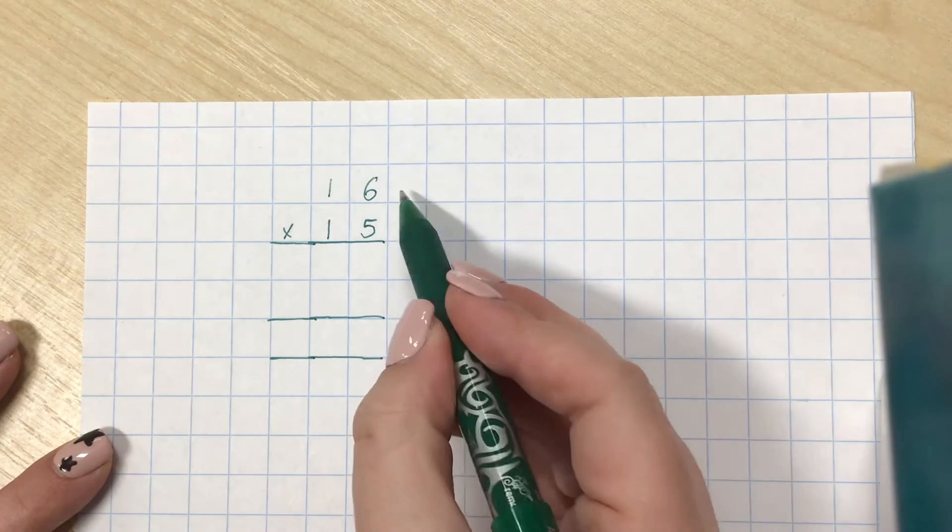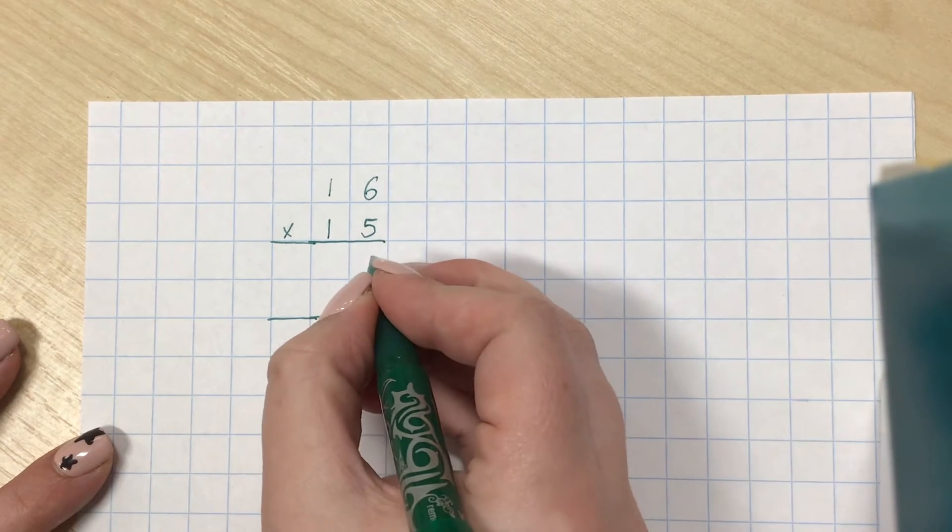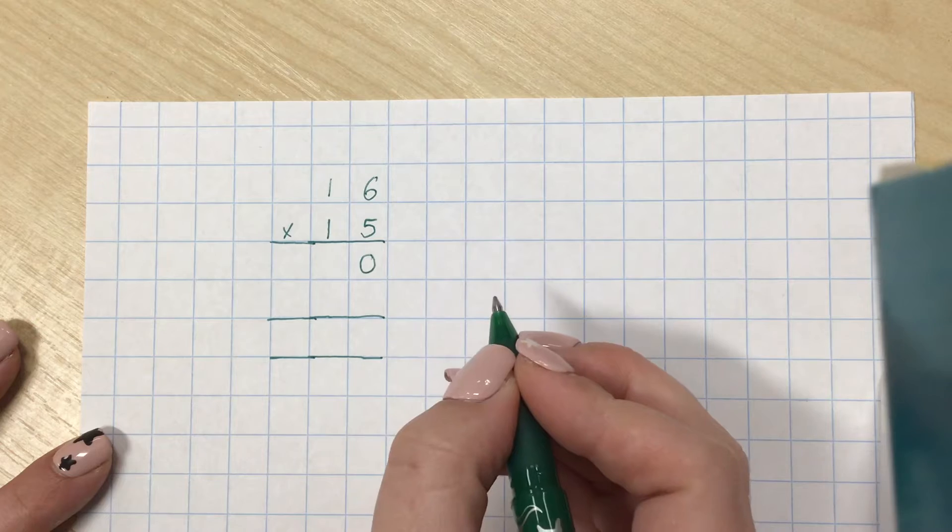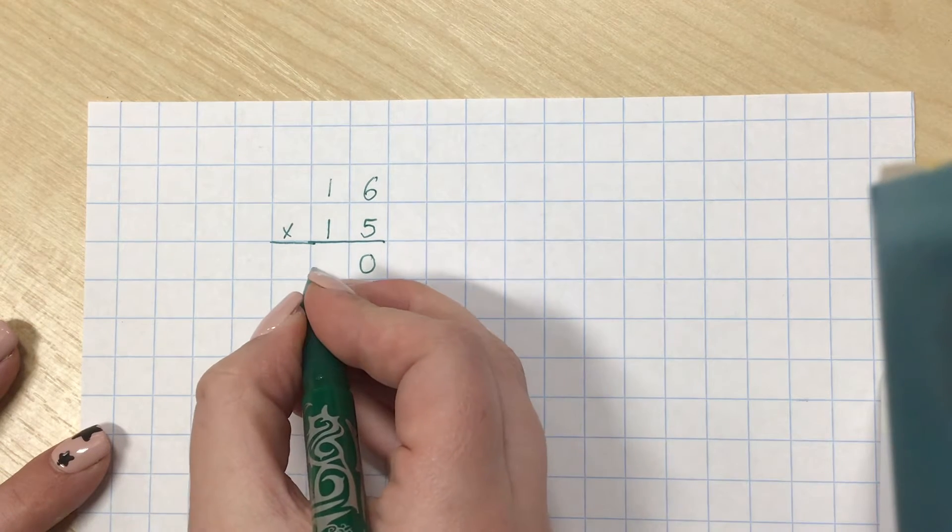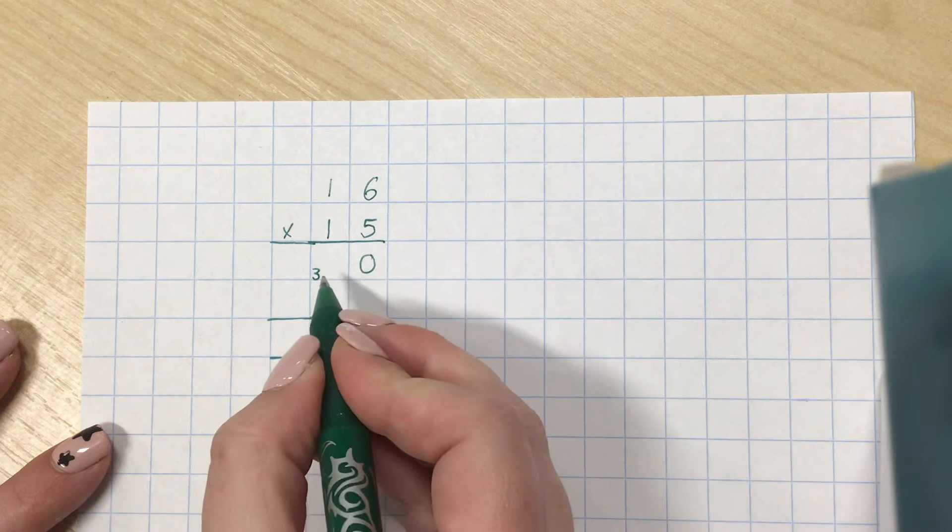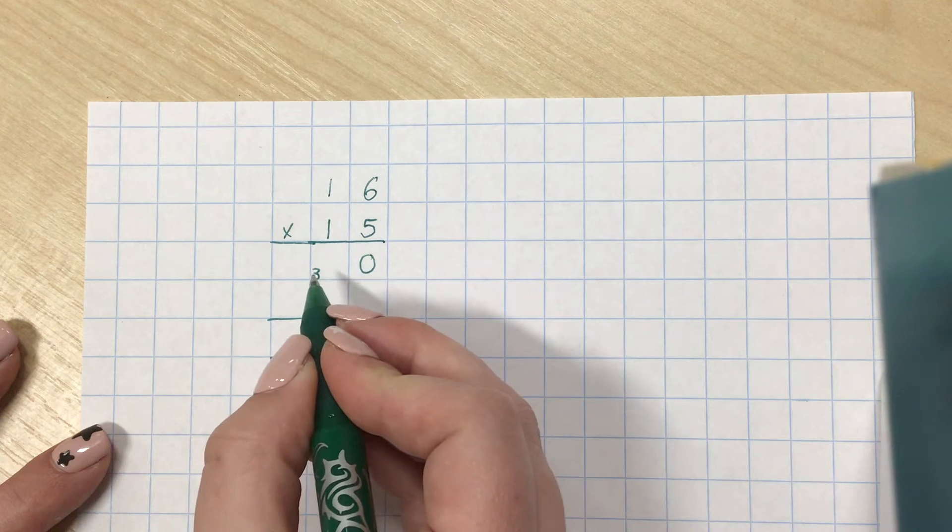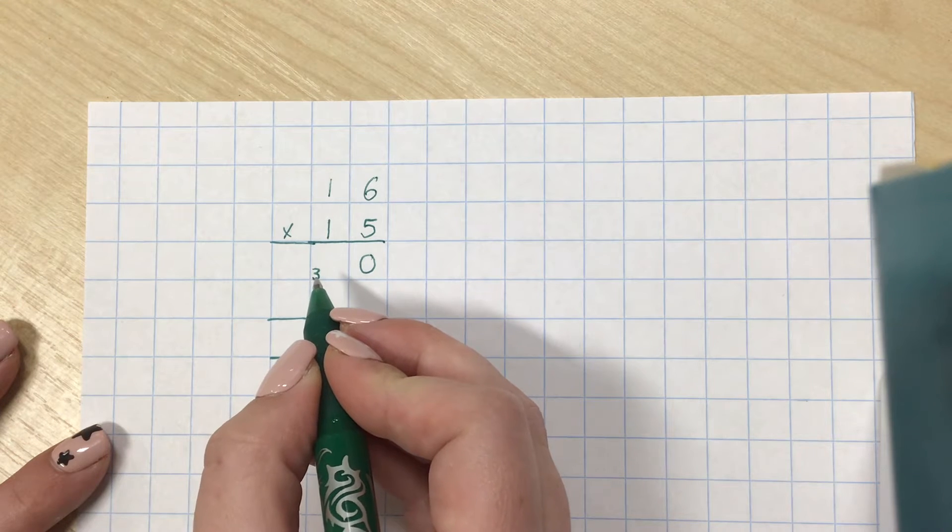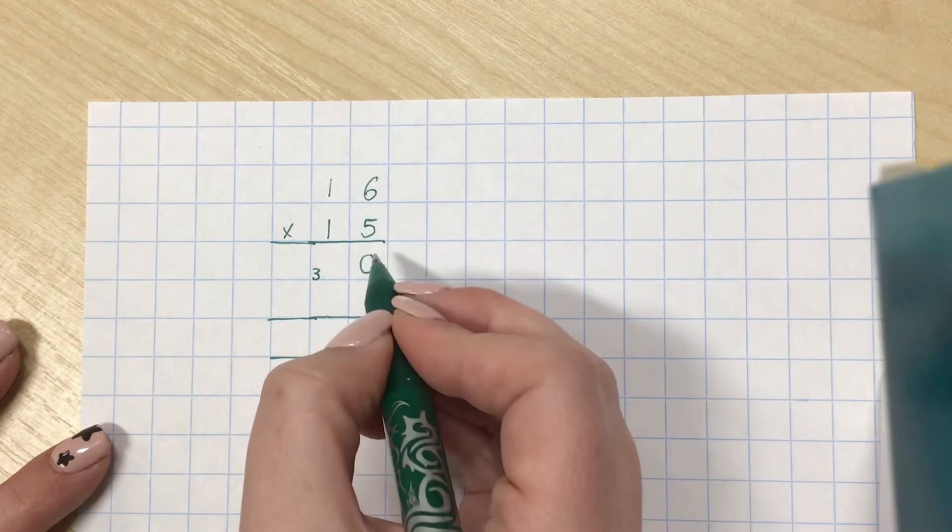So, the first thing I need to do is 6 times 5, which I know is 30. I need to put the 0 in the ones because 30 has 0 ones, and then my 3 needs to go in the tens because there are three tens in 30. So, I need to put it in my tens column to remember to add it on in a minute. I've done 6 times 5.